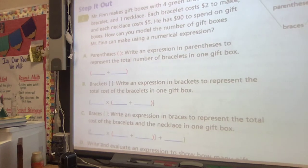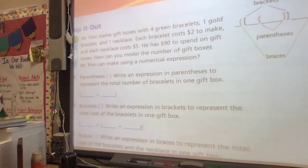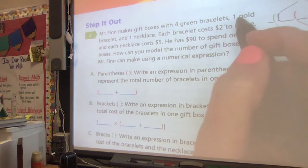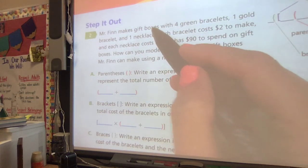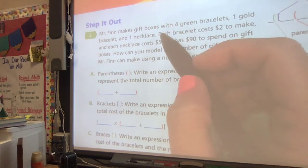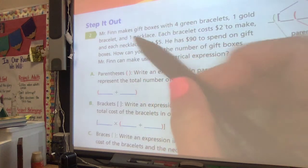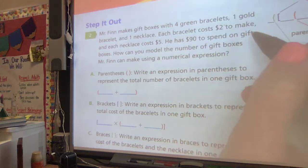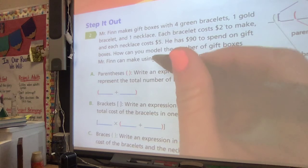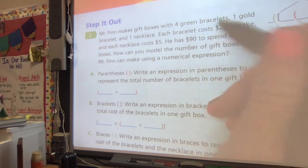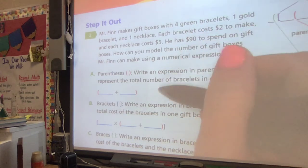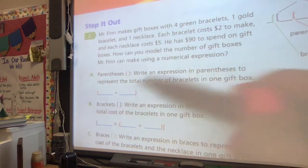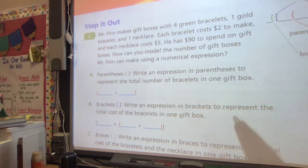Mr. Finn makes gift boxes with 4 green bracelets, 1 gold bracelet, and 1 necklace. So in his gift box, you get 4 green bracelets, a gold bracelet, and a necklace. Each bracelet costs $2, and each necklace costs $5. He has $90 to spend on gift boxes. How can you model the number of boxes Mr. Finn can make using an expression?